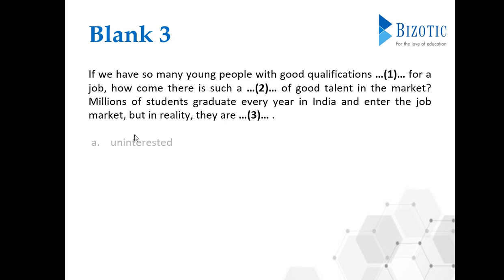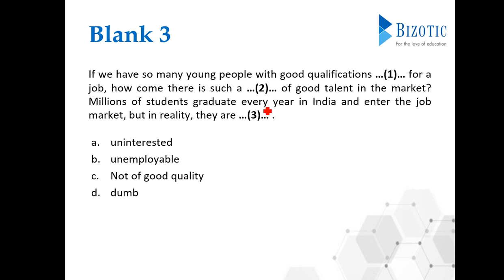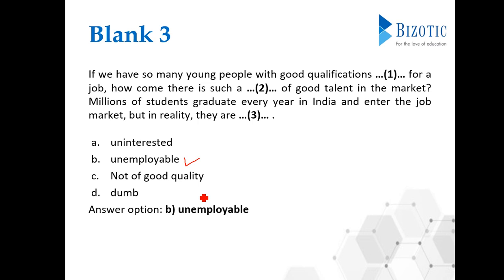Moving on to blank three. 'Millions of students graduate every year in India and enter the job market, but in reality they are dash.' Are they uninterested? No. Are they unemployable? Yes — they are not of good employable quality. Are they dumb? No. The only option that suits here is 'unemployable'. In reality, millions of students graduate but very few countable numbers will get jobs. The correct answer is 'unemployable', which is option B.